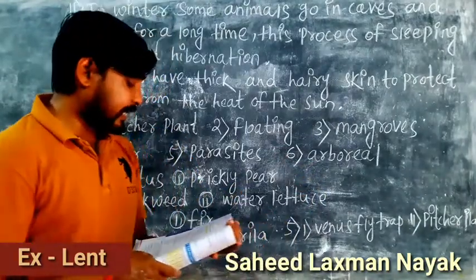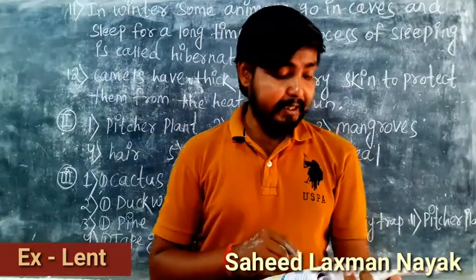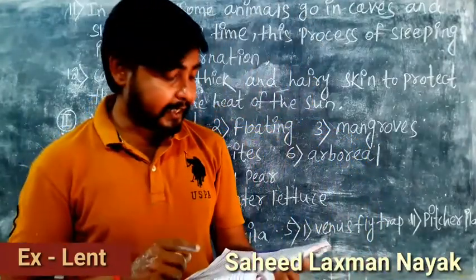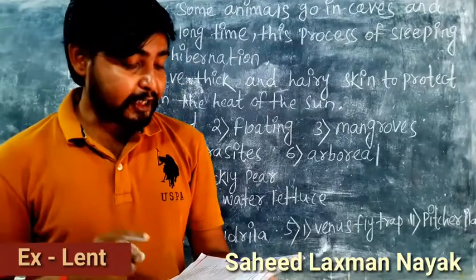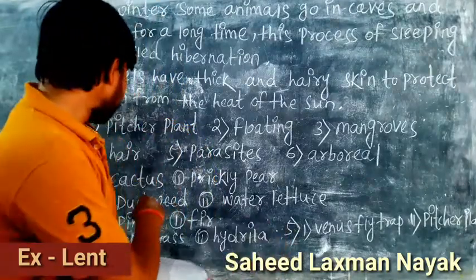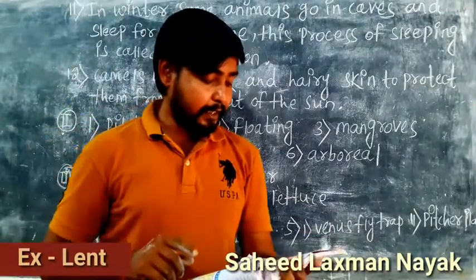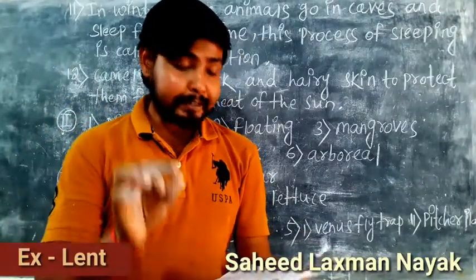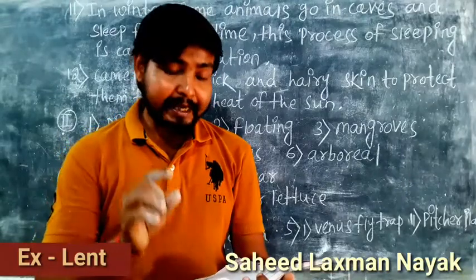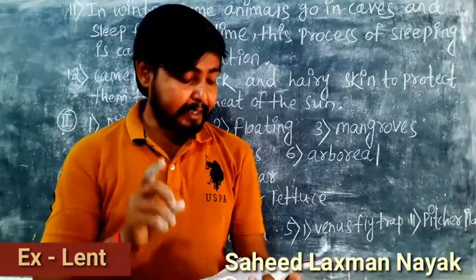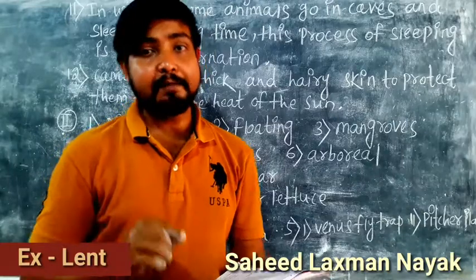Fill in the blanks section. Number one: dash traps insects — the answer is pitcher plant. Number two: water hyacinth and duckweed are floating plants.